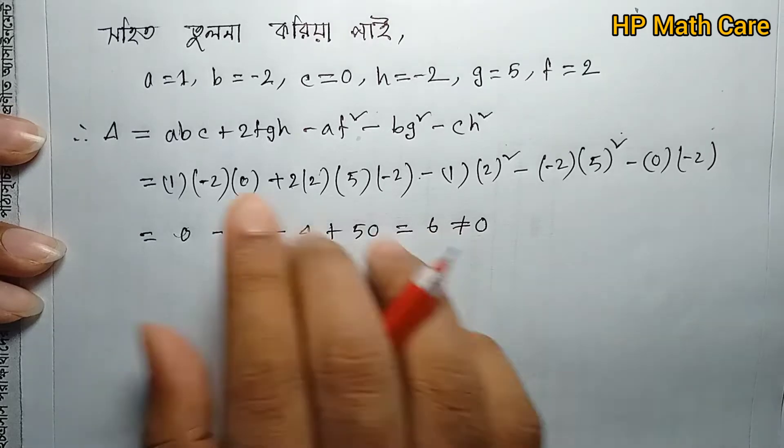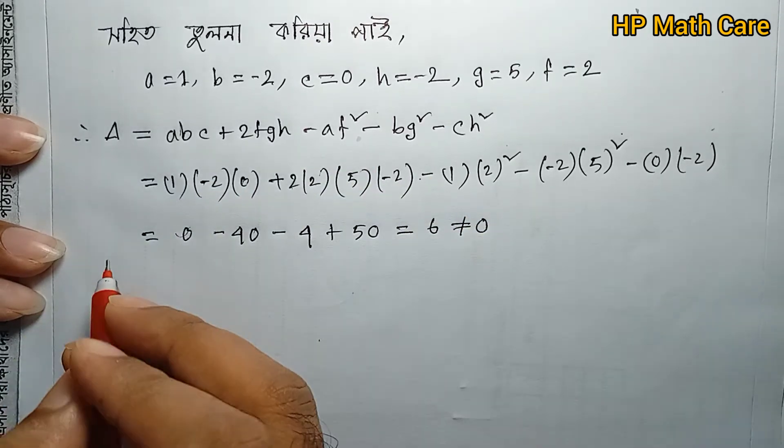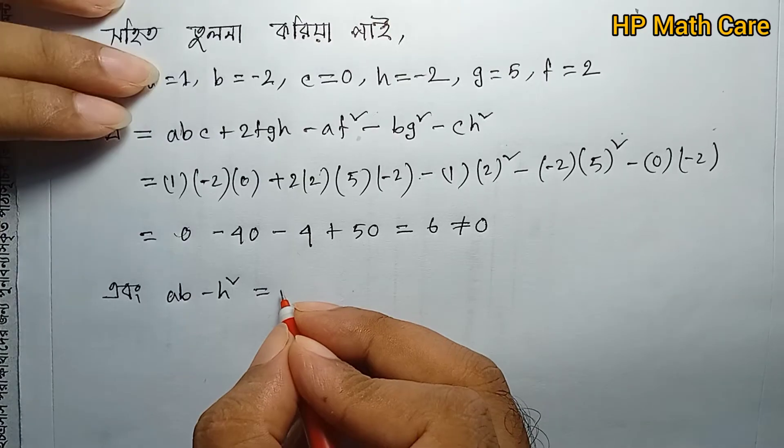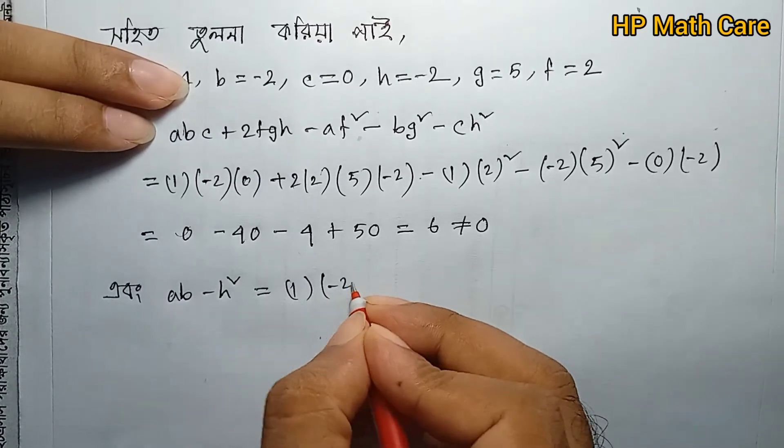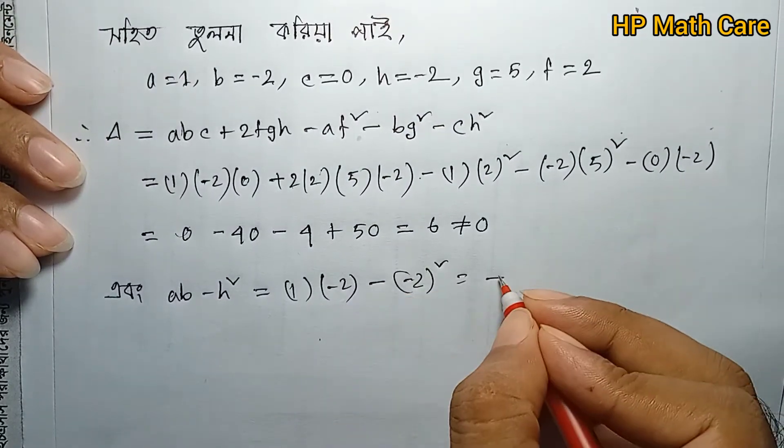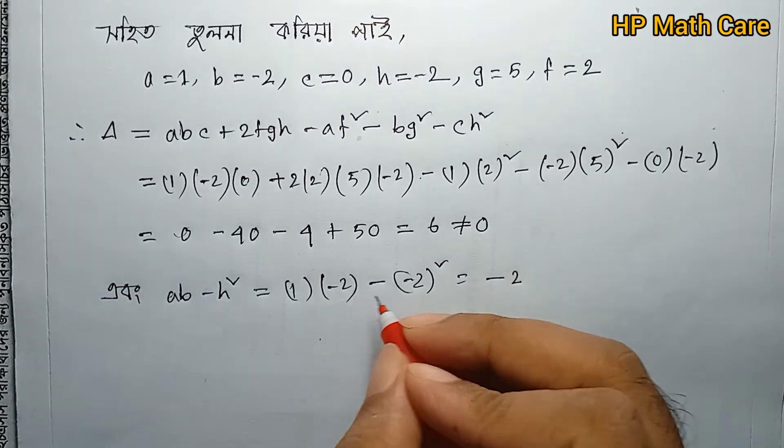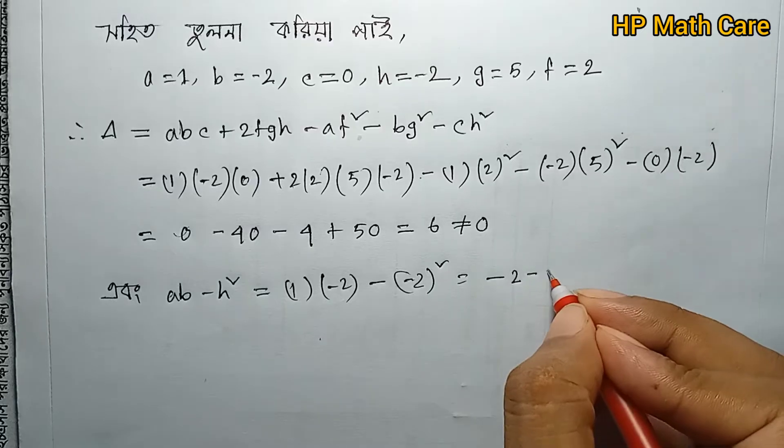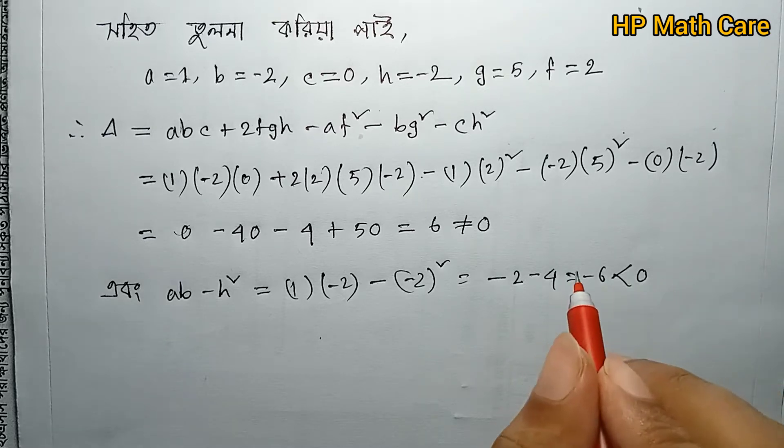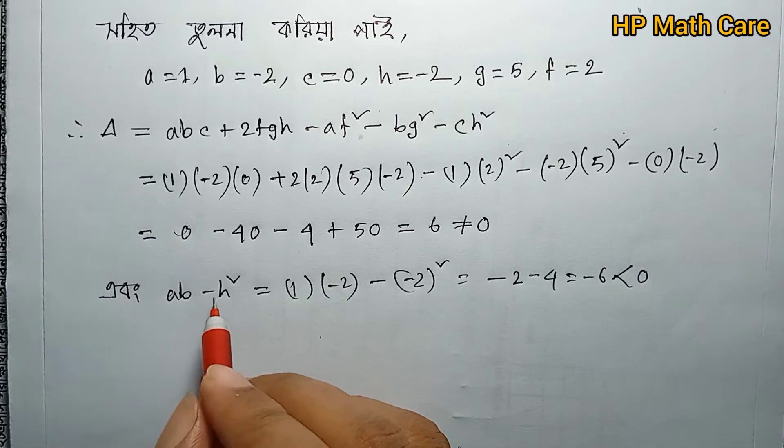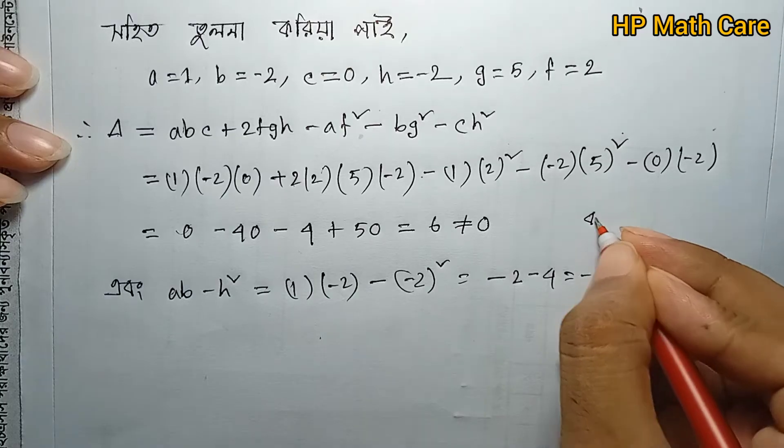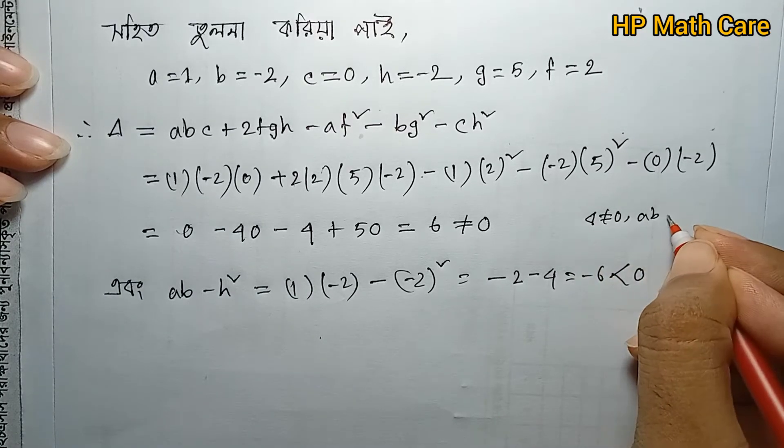Now check ab - h². We have ab - h² = (1)(-2) - (-2)² = -2 - 4 = -6 < 0. Since delta ≠ 0 and ab - h² < 0, this is a hyperbola.